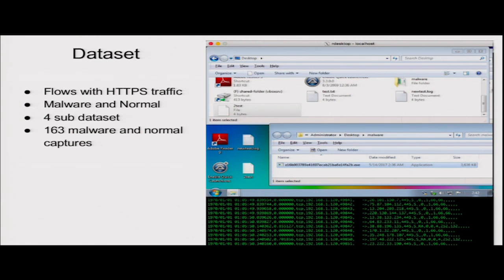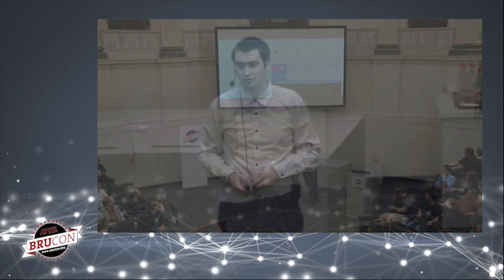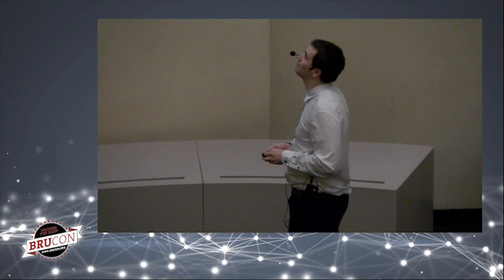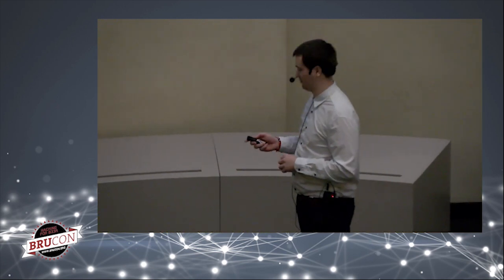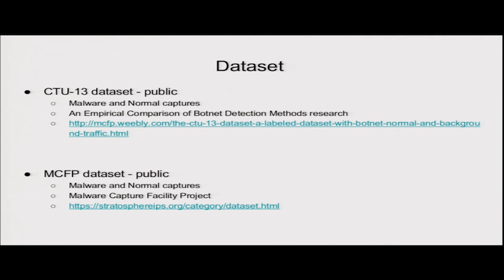The dataset consists of four subsets with 164 captures in total, both malware and normal. Malware traffic is captured by running malware in a virtual machine and capturing its traffic. The first part is the CTU-14 dataset, generated at Czech Technical University. It contains malware and normal captures, is public, and originated from botnet detection research.